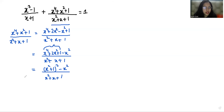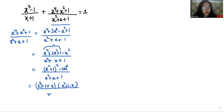Now I'm going to use the identity a² minus b² in the numerator, that is (a plus b)(a minus b). So a is x² plus 1, giving us (x² plus 1 plus x)(x² plus 1 minus x), divided by x² plus x plus 1. We can cancel out the common factor, so this whole expression gives us x² minus x plus 1.